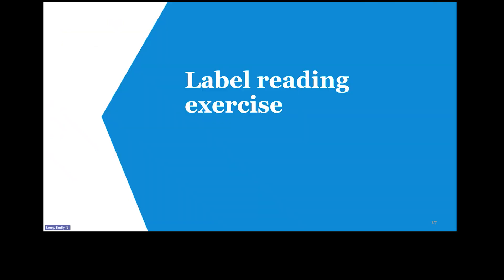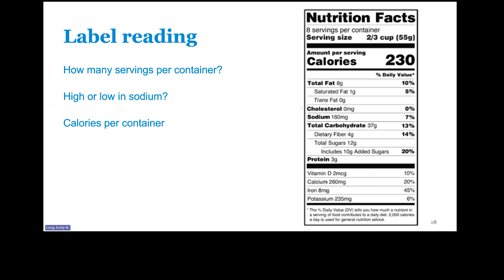Now that we're experts at reading nutrition labels, we're going to do a little exercise and look at a nutrition label. How many servings per container are in this food? It's eight servings — you can see that right at the top. Is this high or low in sodium? It's seven percent, so it's considered low. How many calories per container? Per container is the key phrase, so it's the whole container. There are eight servings, so we multiply that by 230 calories, which totals 1,840 calories for this food.